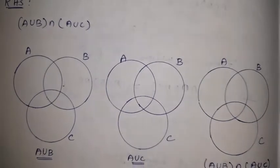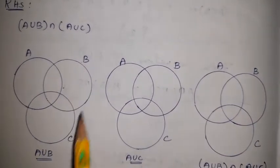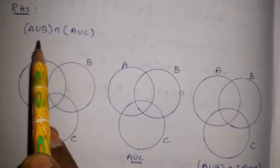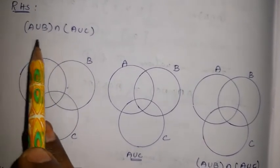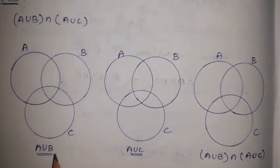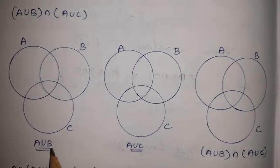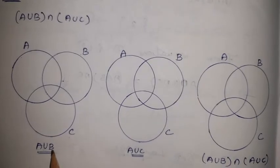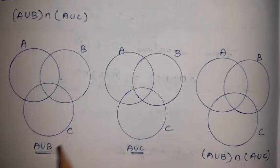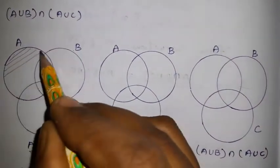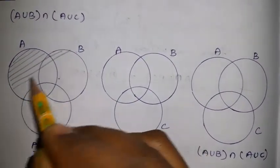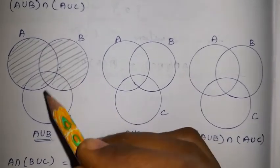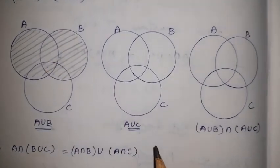The right hand side has three diagrams with three sets. The first bracket is A union B. For the first diagram, we consider sets A and B — Set C is present but we consider only A and B. We shade circles A and B together. This shaded region of A and B is the first diagram of the right hand side.